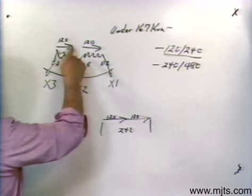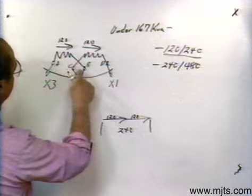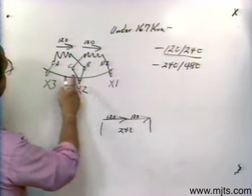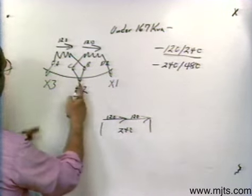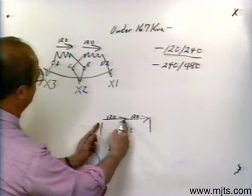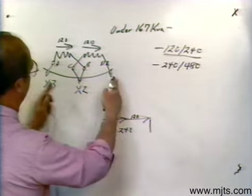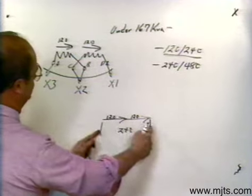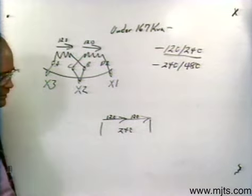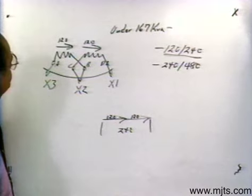If I series connect, I'm going to go head to tail and connect C and B to the center, so I would get half that value — 120 volts on one half, 120 volts on the other half, and 240 volts all the way across. We can graphically represent it exactly like that.